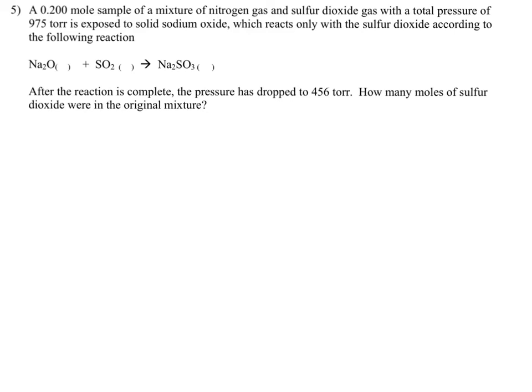We have a sample of a mixture of nitrogen gas and sulfur dioxide gas with a given pressure. This mixture is exposed to sodium oxide, and the only thing that reacts with the sodium oxide is sulfur dioxide. The nitrogen doesn't react. We need to supply the states here, so we should remember that sodium oxide is an ionic compound, so it's a solid. Sulfur dioxide is a gas, that's the only thing that's going to obey the gas laws in this equation. Nitrogen will too.